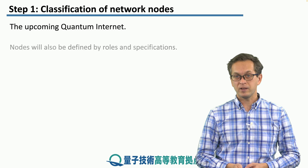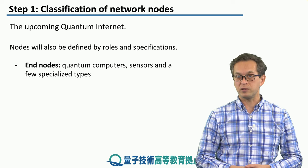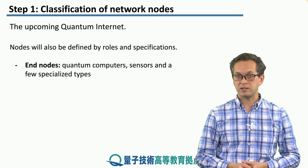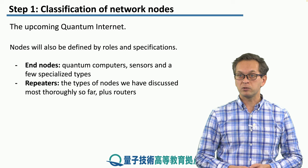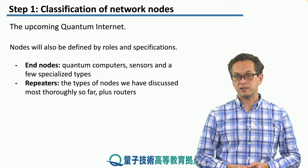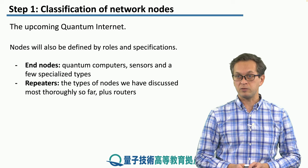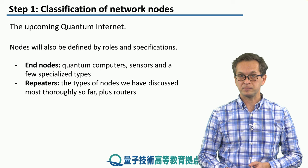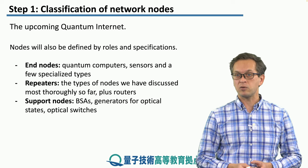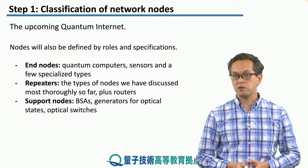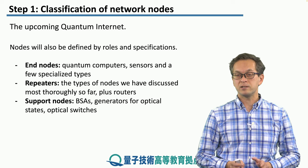Here they are. We're going to talk about end nodes — in this case, quantum computers, quantum sensors, and a few other specialized types of nodes. We have repeaters, which we've talked about extensively in this module. Remember, these are different from classical repeaters — they don't just boost the signal, they use entanglement swapping. And then we have other types of support nodes, such as Bell State analyzers or BSAs, generators of optical states, and optical switches. We're going to talk about all of these in the current lesson.